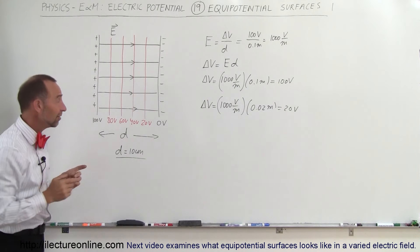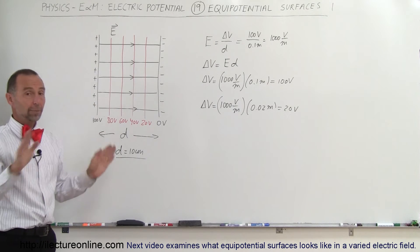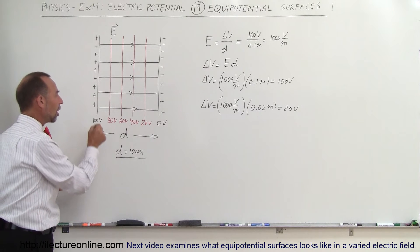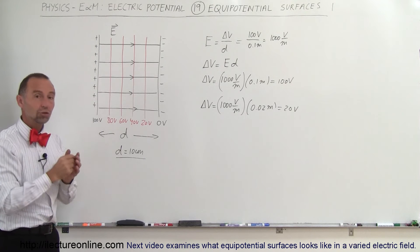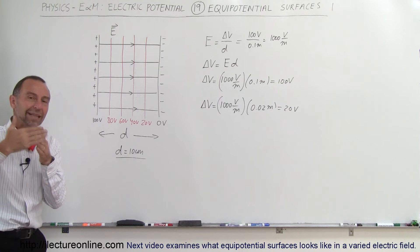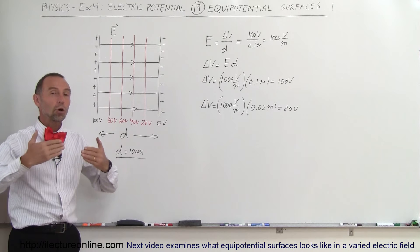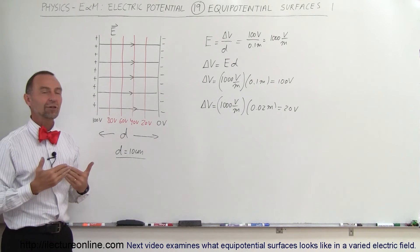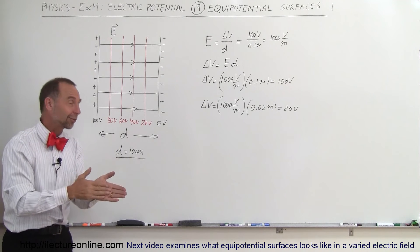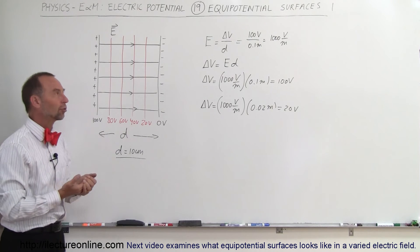What's interesting about them is if you travel along an equipotential surface, the potential doesn't change at all. If you take a charge and move it along an equipotential surface, there's no work involved because the potential doesn't change. That means you're traveling perpendicular to the electric field. Equipotential surfaces are always perpendicular to the electric field, and therefore traveling along them requires no work if a charge is moved along an equipotential surface.